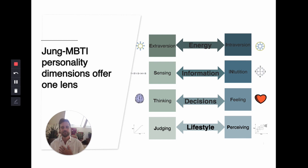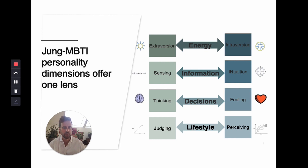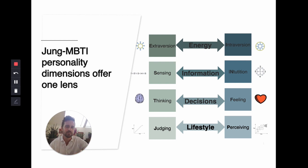On the lifestyle dimension, do you tend to be someone quite judgmental — you see something and straight away know what to make of it — or someone more perceiving who always sees opportunities and leaves things open? This framework, with four dimensions and two extremes each, allows you to cluster people into one of 16 profiles.